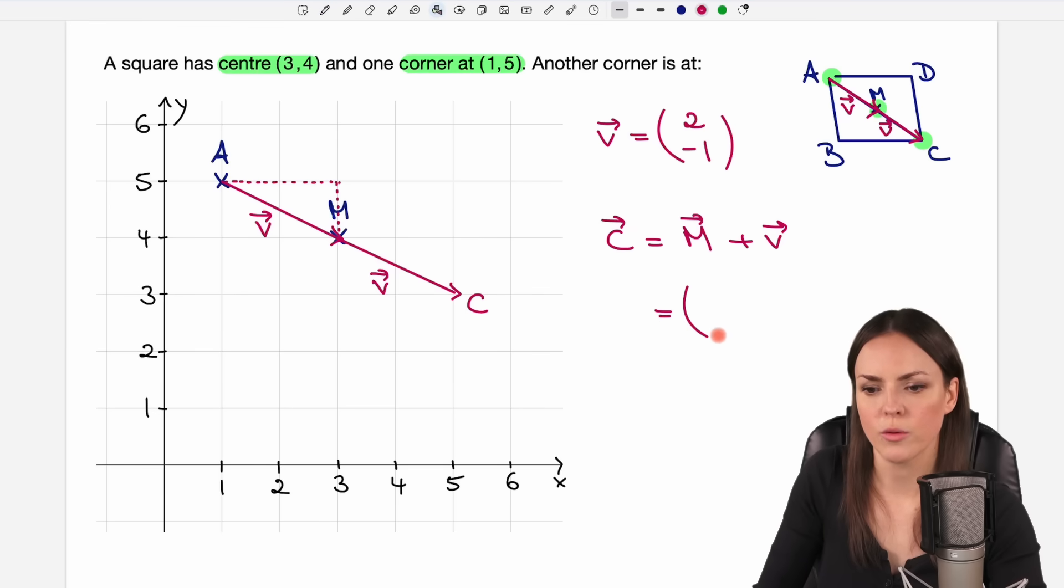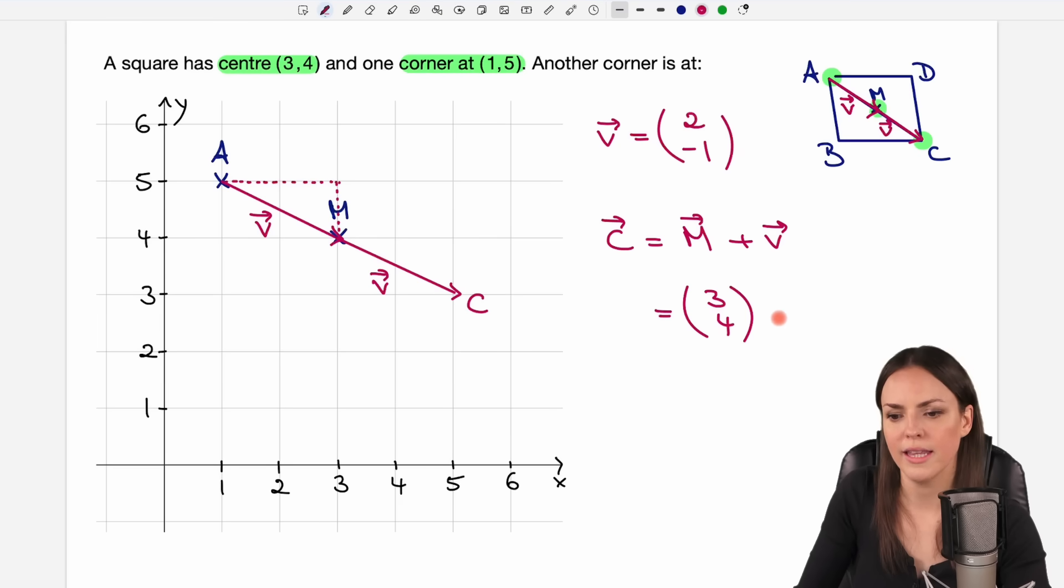Let's do this with the coordinates. M was my center at (3,4). Then we add the vector v, which had the coordinates (2,-1). If we add these two, we get a result of 3 plus 2 equals 5, and 4 plus -1, so 4 minus 1 equals 3. (5,3). Yes, these are the coordinates we can see in this picture here as well. So everything is good. We found a corner, (5,3).